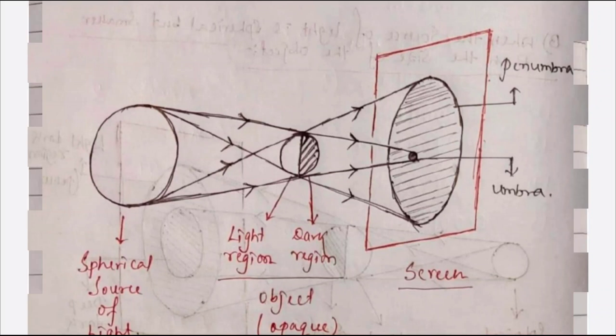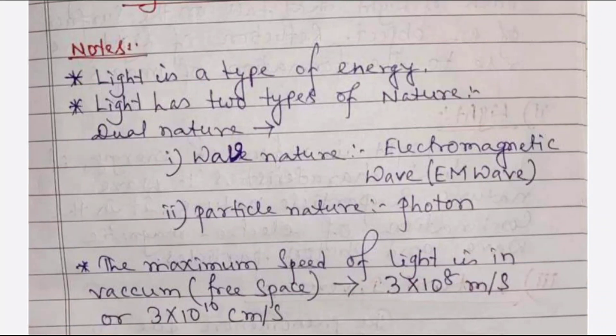All four diagrams are very important for your post-mid exam. Now I'm going to discuss a few important parts of this chapter. As this chapter is based on light — light is a type or form of energy. Light has two types of nature or characteristics, called the dual nature of light. One is wave nature; that's why light is called a form of electromagnetic wave, or EM wave in short.